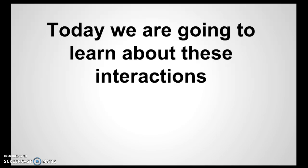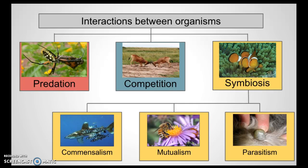So we're going to learn about these interactions. Here are some examples of the types of interactions that you should know about. We have predation, competition, and then symbiosis — and there are different types of symbiosis. We have commensalism, mutualism, and parasitism. You can pause the video so you can write these down, because we're going to define these.